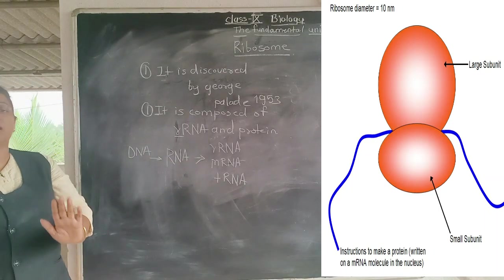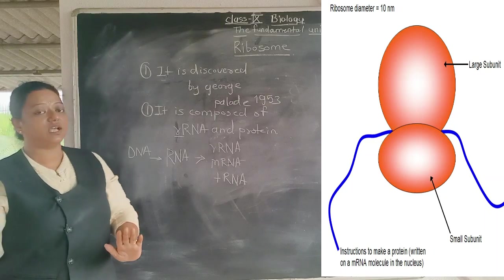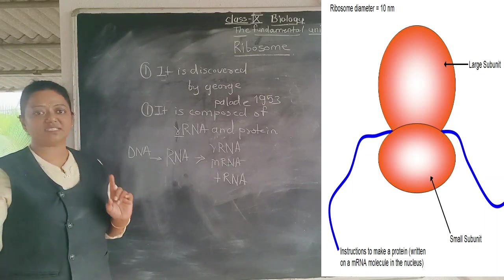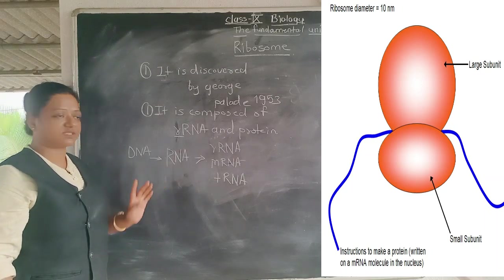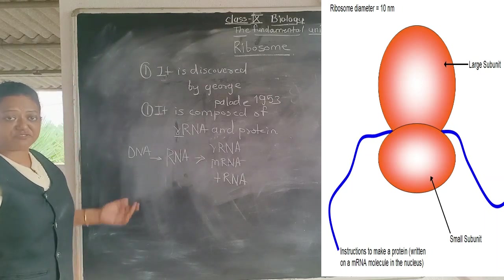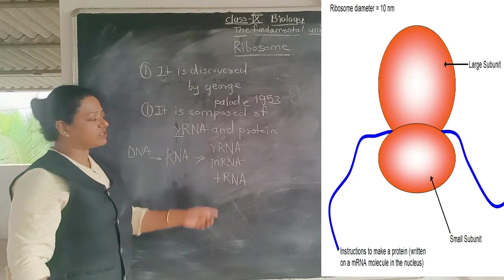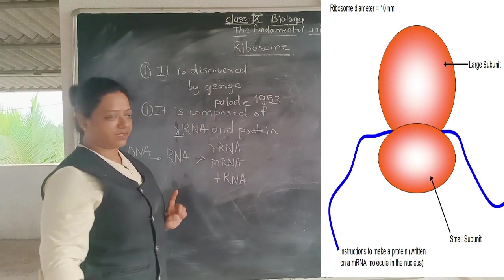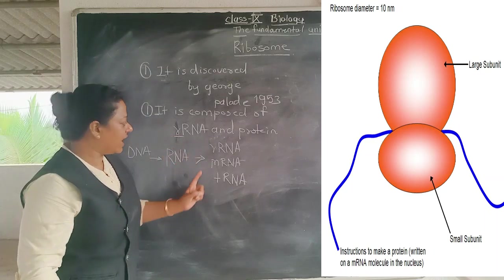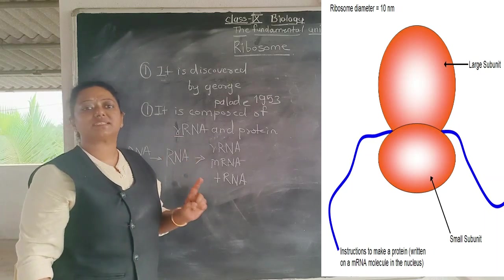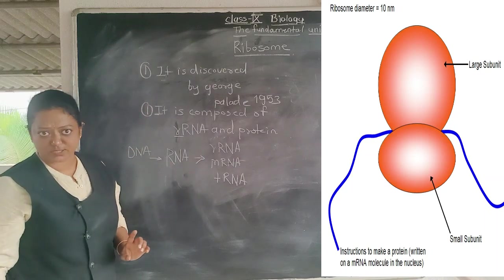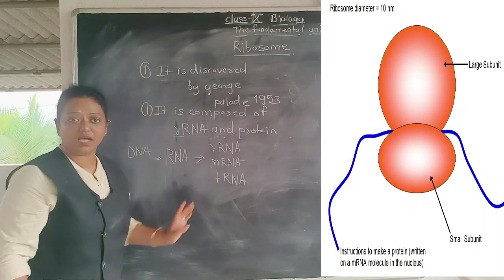For class 9, this level of understanding about DNA and RNA is sufficient. RNA has three types: rRNA (ribosomal RNA), mRNA (messenger RNA), and tRNA. The ribosomes are made up of ribosomal RNA. There is no need to go into all details now, but you should know what RNA means: ribonucleic acid, with three types.